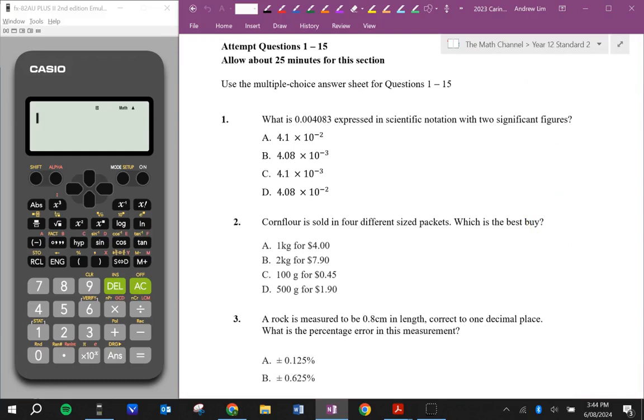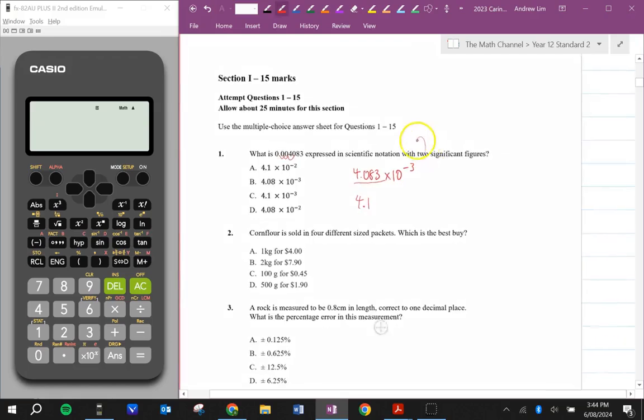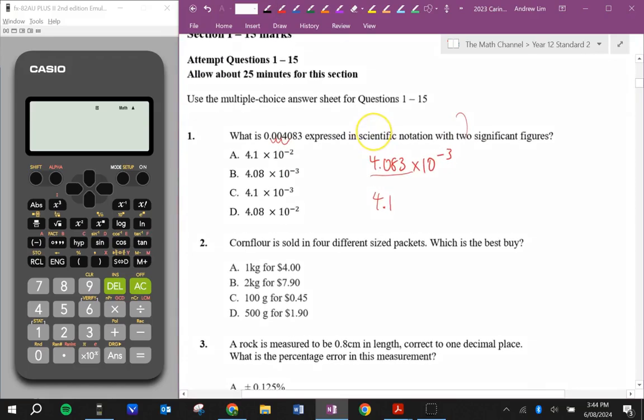What is 0.004083 expressed in scientific notation with two significant figures. So in scientific notation this is 4.083 times 10 to the power of negative 3. But this has four significant figures so we want two significant figures so that's 4.1 because of the 8. So that 8 tells us it rounds the 0 up to 1. So 4.1 times 10 to the power of negative 3.